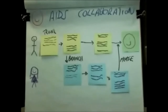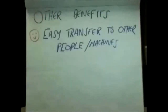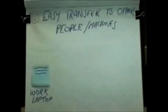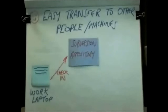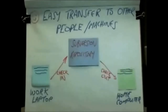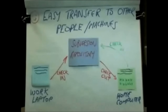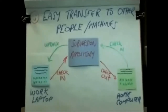Subversion also makes it very easy to move files between machines or make your files available to someone else. For instance, you have code on a laptop at work — you check the files into the Subversion repository, then check them out to your home computer. You don't need to carry a flash drive; all you need is an internet connection to the Subversion repository. Then at home you make a change, check it into the repository, and when you're next at work you can update the version on your work laptop.